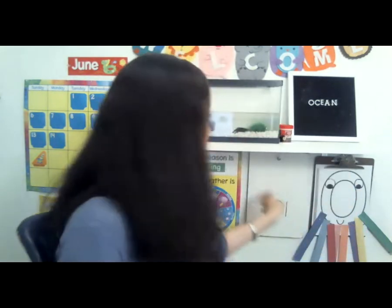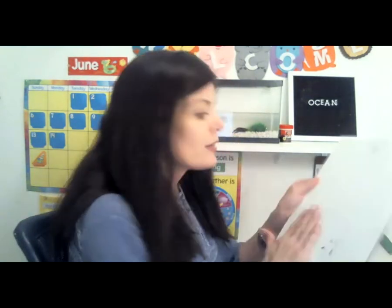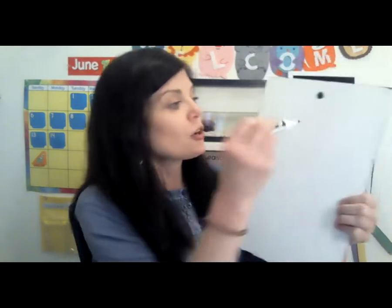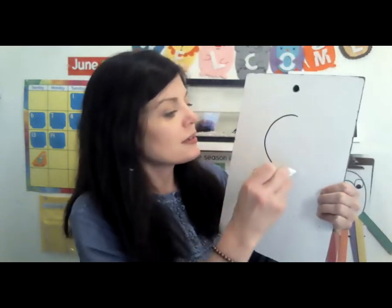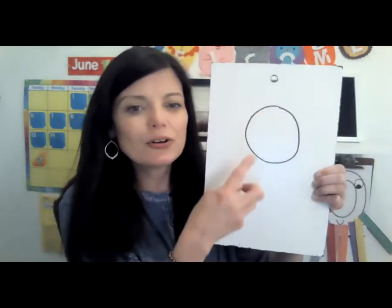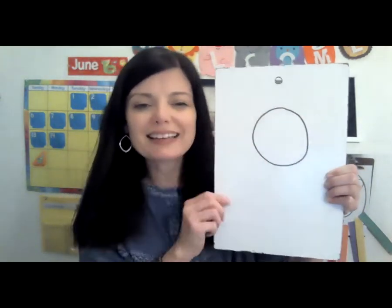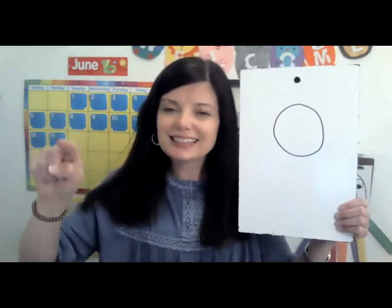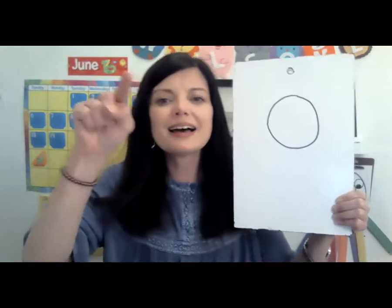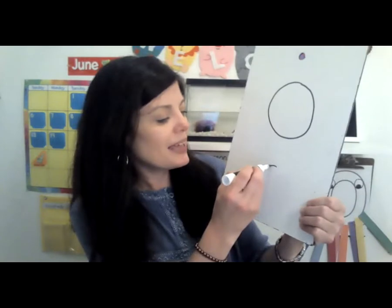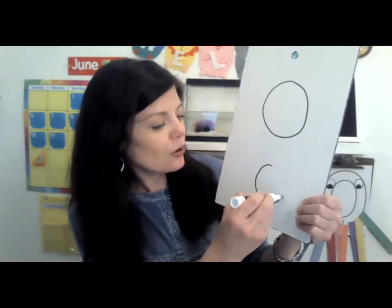Let's learn how to write the letter O. To write the letter O, you're just going to start at the top, curve around and back. That's how you make the letter O. You can try on your paper or you can sky write like this — curve around and back. To make the little letter O, you do the same thing, it's just smaller. Curve around and back.